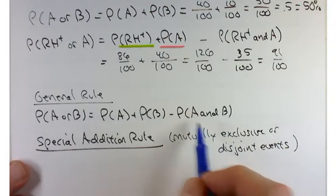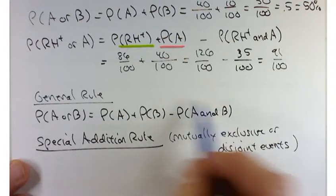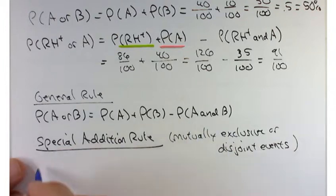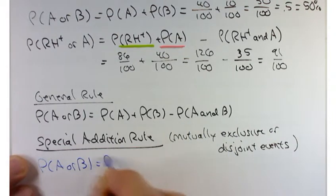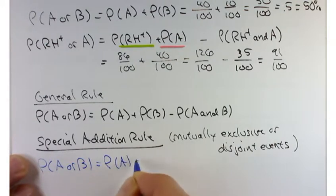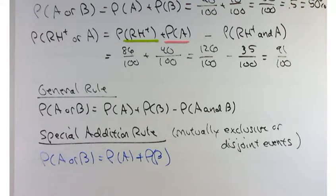If that's true, if you have a mutually exclusive event, this becomes a zero. Because you can't have one and the other. So in that case, probability of A or B is simply the sum of both probabilities. Probability of A plus the probability of B.